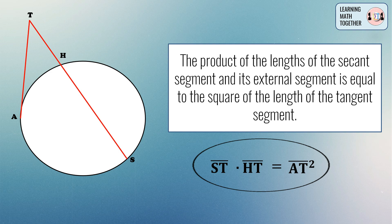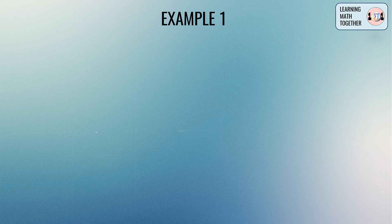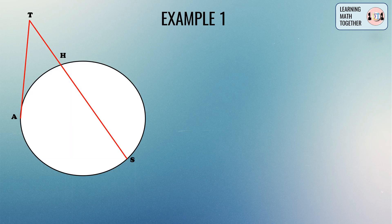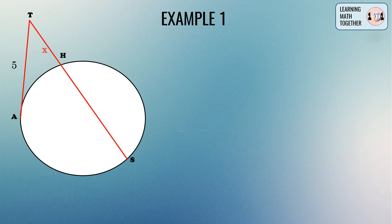We will now use this formula to compute the length of the segments. For example number one, using the figure from before: the tangent segment AT is 5 units, the external segment HT is x — the unknown value — and the secant segment ST is 10 units.